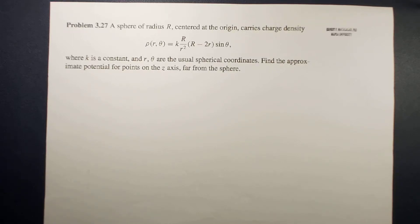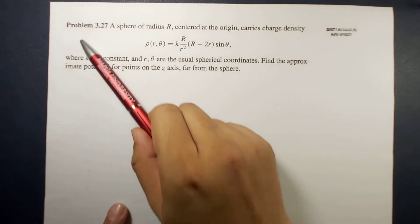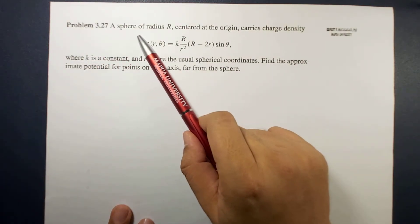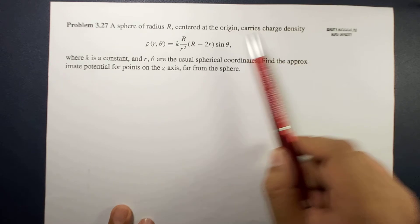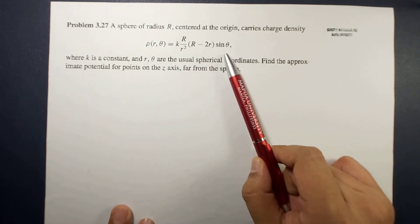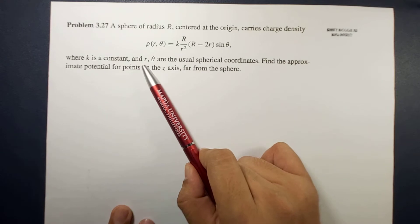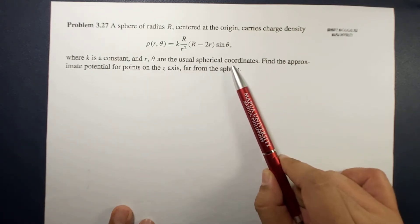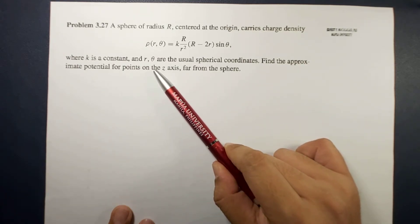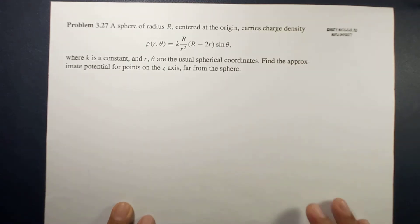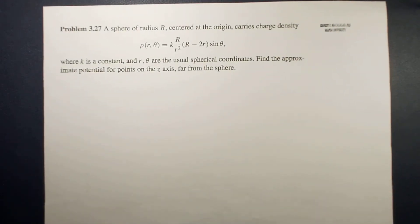What's up guys, this is me sir Ernest and today we will have an example related to multiple expansion. Problem 3.27: a sphere of radius R centered at the origin carries charge density given by this equation, where k is a constant and r, theta are the usual spherical coordinates. Find the approximate potential for points on the z-axis far from the origin.